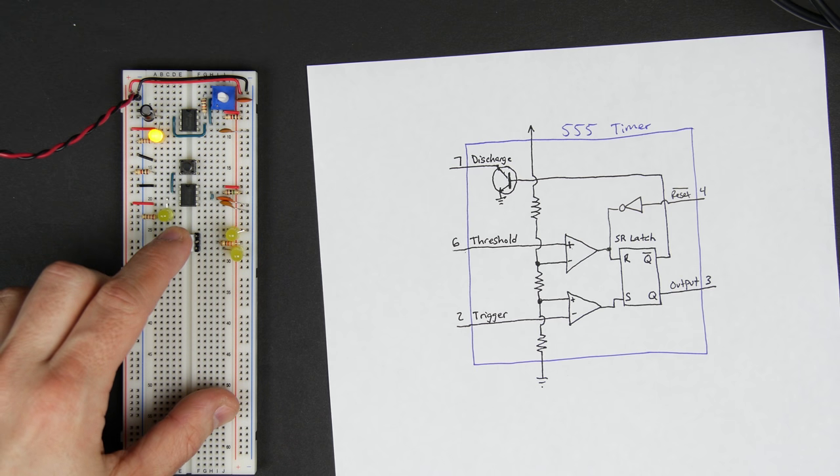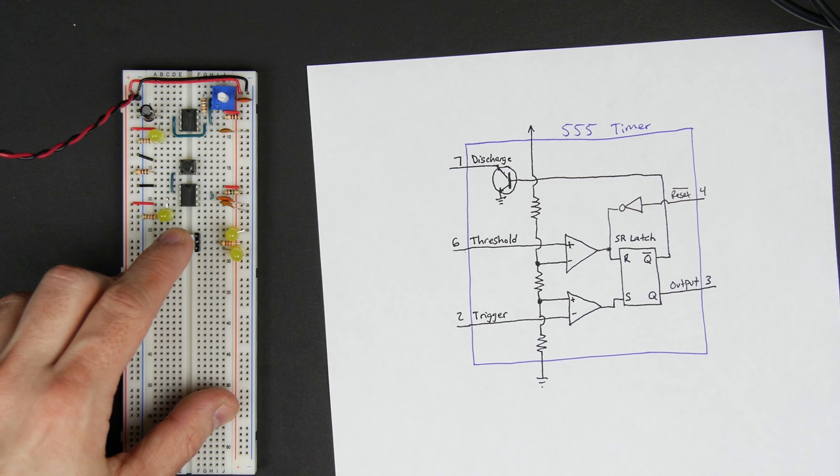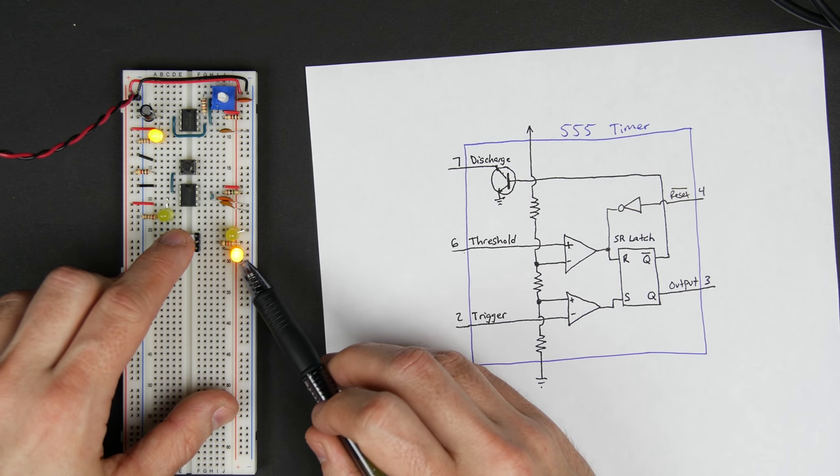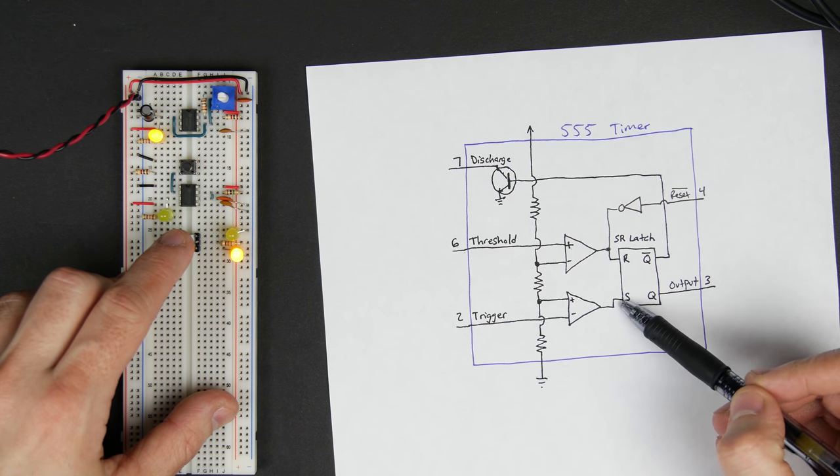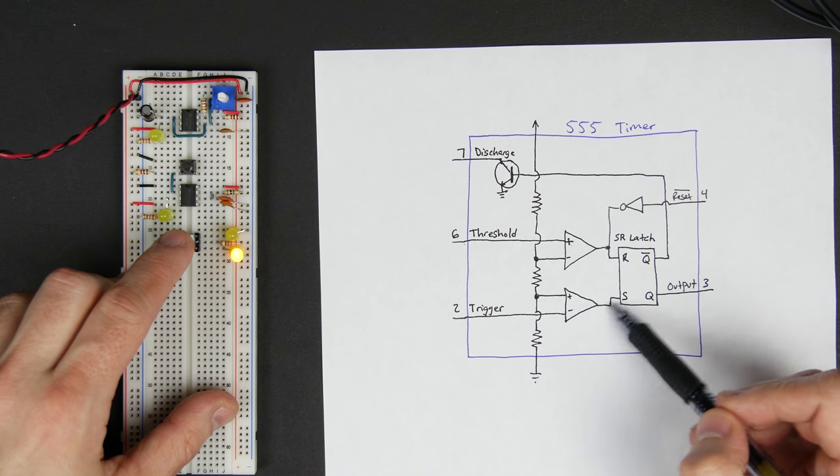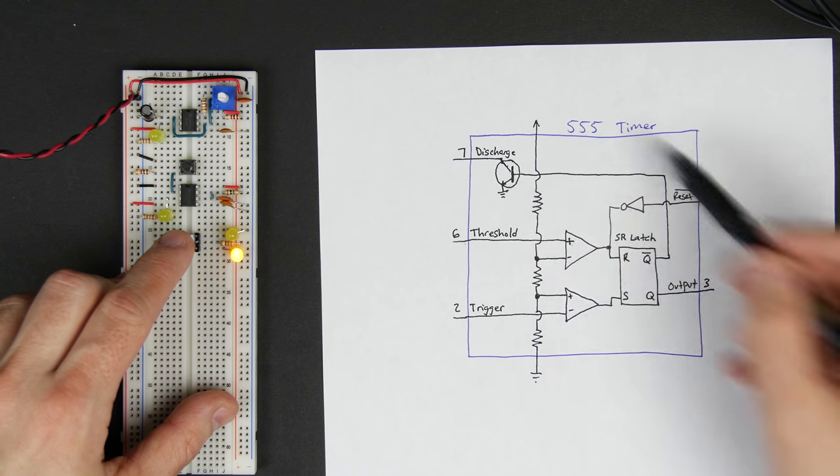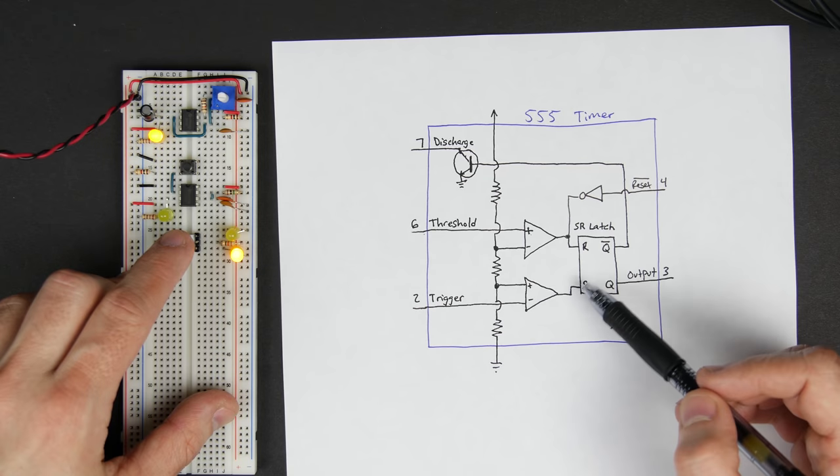So it's called break before make. And you can buy switches that are make before break, if that's what you want. But I think most switches are typically break before make. And so what that means is that it can be, if we're, if this is, say, our reset, or our set condition, let's say we're putting a set into this SR latch, and forget the fact that it's part of a 555, just imagine we're looking at an SR latch.